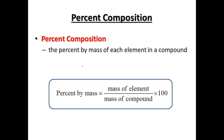Percent composition is percent by mass of each element in a compound. Percent by mass would be the mass of the element divided by the mass of the compound, and since we're dealing in percents the formula would be times 100. So it's going to be what part of each element makes up the total.